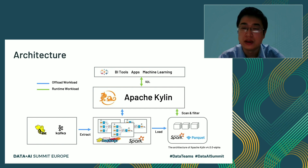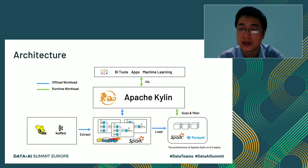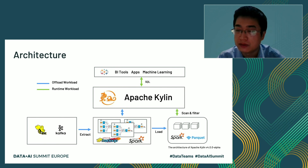Looking at Kylin's technical architecture: Kylin extracts source data from Hive and Kafka — Hive being the most common data warehouse standard on Hadoop, and Kafka being popular for streaming. After extraction, Kylin executes MapReduce or Spark jobs to run the pre-calculation and stores results to HBase. At query time, SQL from the application is translated into scans and filters against HBase, and a query engine retrieves the pre-calculated result to finish the query.